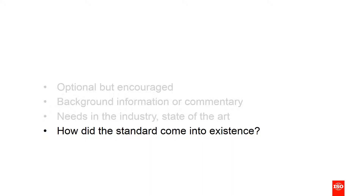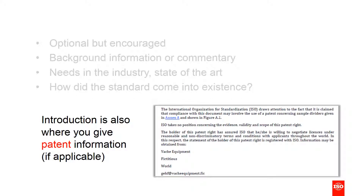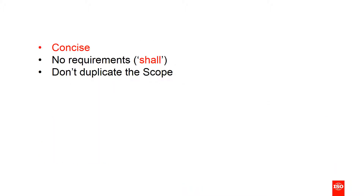These are all examples of useful information that would not be appropriate in the body of the standard. If your standard involves the use of patents, you should also mention these in the introduction, and you can find more information on the use of patents on the ISO website. It's always best to keep any element of a standard as short and concise as possible, so the introduction should not be a long essay.